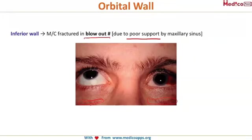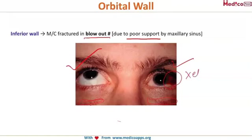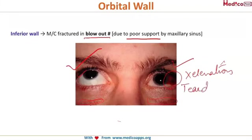In the image here, the normal side has a normal appearance, while the injured side shows a small subconjunctival hemorrhage. The striking feature is that there is no elevation — the right eye elevates well, but the left eye does not, because the inferior rectus muscle is trapped between the fractured inferior wall of the orbit. On X-ray, this appears as a teardrop sign, which is noted in inferior orbital wall fracture.